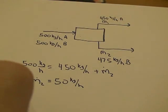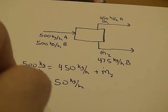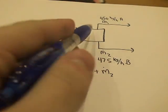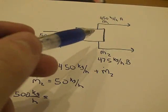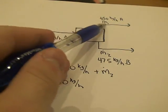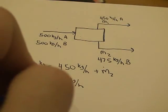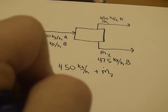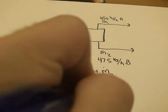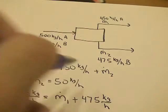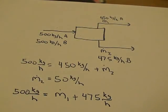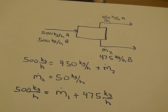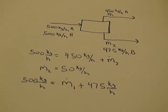Now, we do the same thing for our species B. We know we have 500 kilograms per hour in, and that equals the mass of the top and the bottom, which would be our M1 plus the 475 kilograms per hour that we get out on our bottom. So, when we do the same thing and solve for M1, we end up getting 25 kilograms per hour.